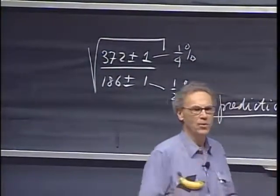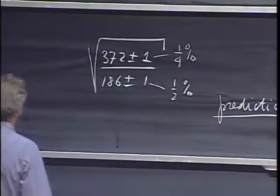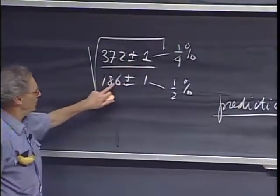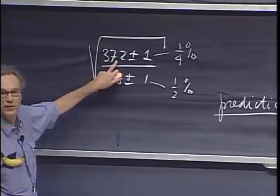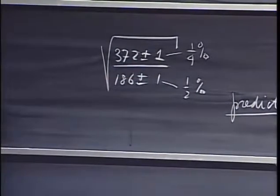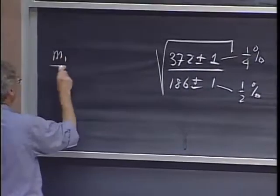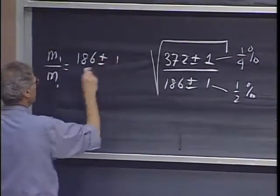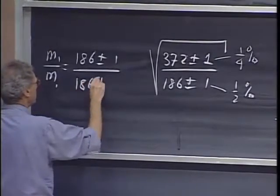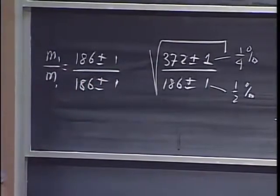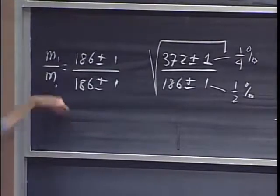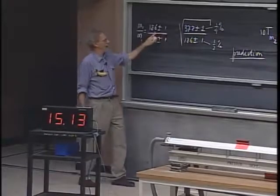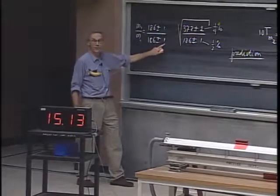And the reason why that is completely wrong has to do with the fact that these two errors are coupled to each other. See, the 186 is included in the 372. The best way I can show you this, suppose I measured M1 divided by M1, which would be 186 plus or minus one divided by 186 plus or minus one. That number is one with a hundred zeros. This number is one. You have the mass of one object, you divide it by the same object. Whereas if you would say, ah, this is a half a percent error, and this is a half a percent error, you would say the ratio has an error of one percent, and that's not the case.